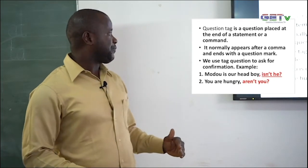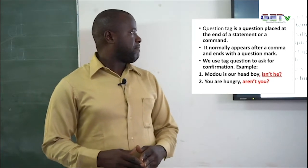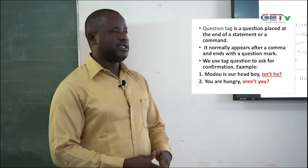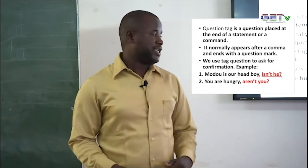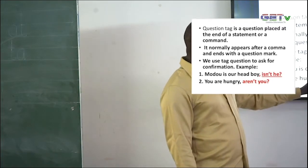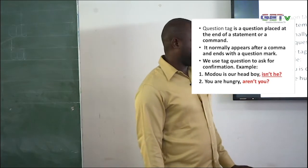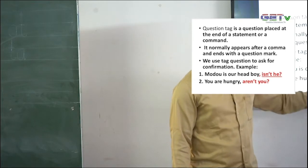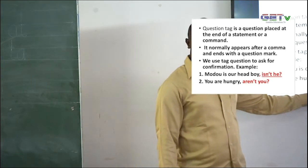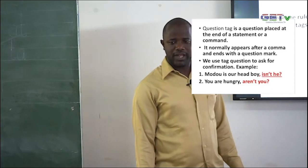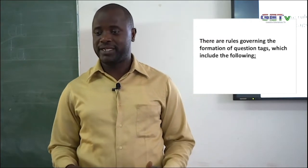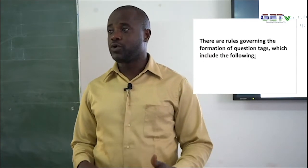Question tags normally come after a comma in a statement. Look at the example: 'Modu is our head boy,' — that is the statement — then after the comma, the question tag comes: 'Isn't he?' Another example: 'You are hungry, aren't you?' To understand question tags better, you need to look at the rules that govern their formation.